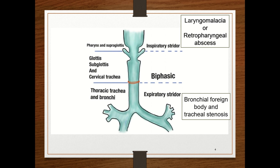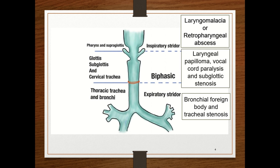Likewise, biphasic stridor occurs when there is obstruction at the level of the glottis, subglottis, and cervical trachea. Causes include laryngeal papilloma, vocal cord paralysis, subglottic stenosis, and so on.